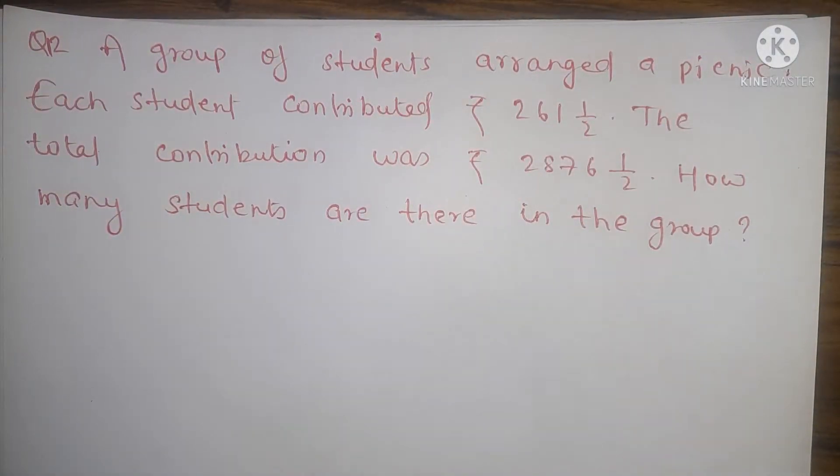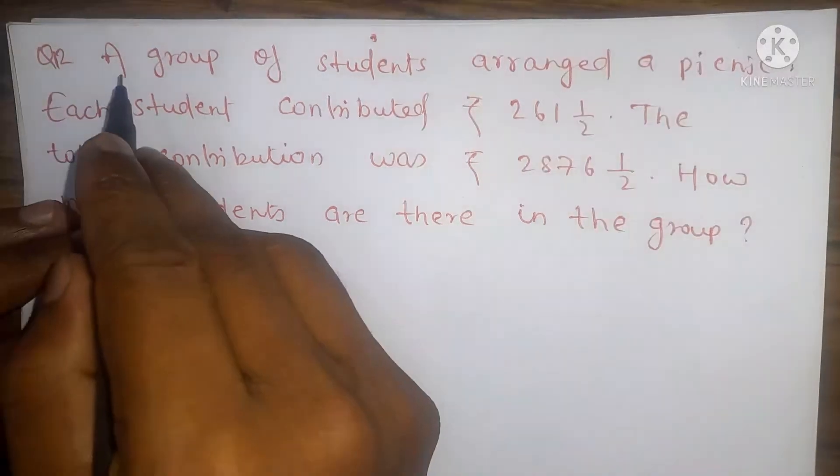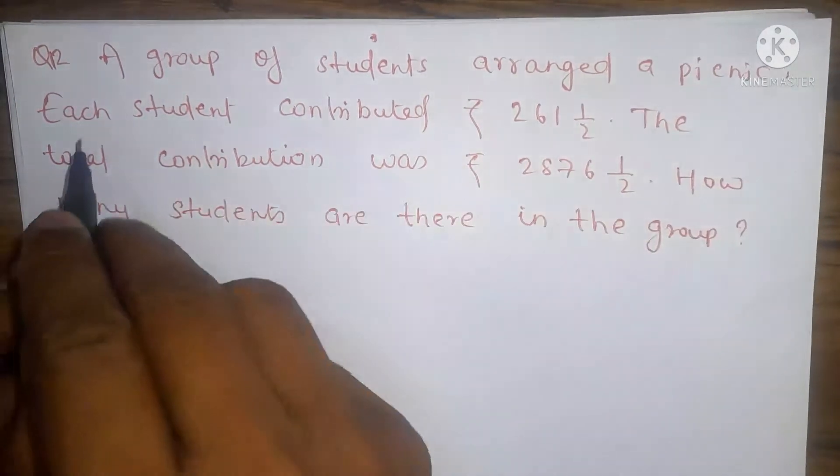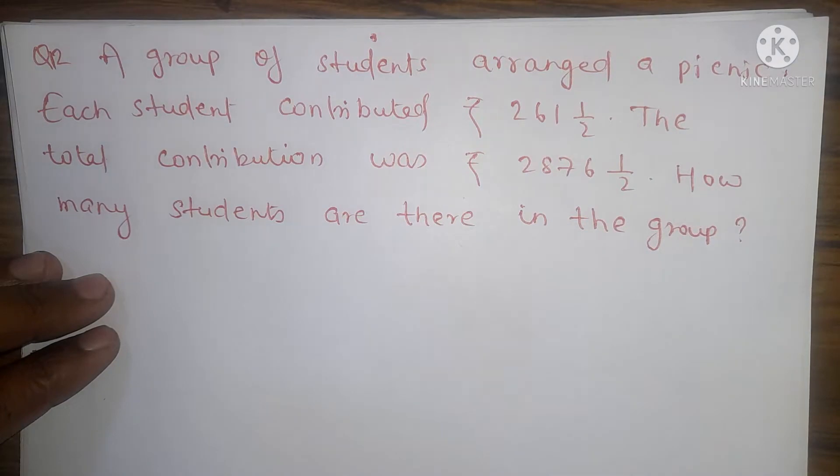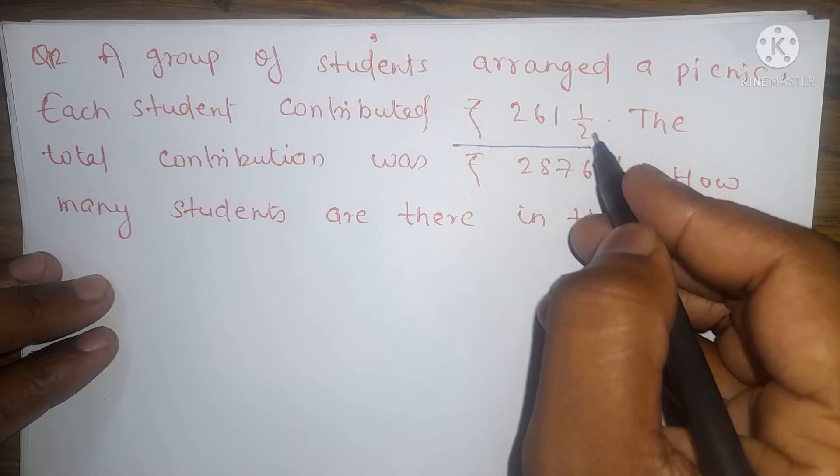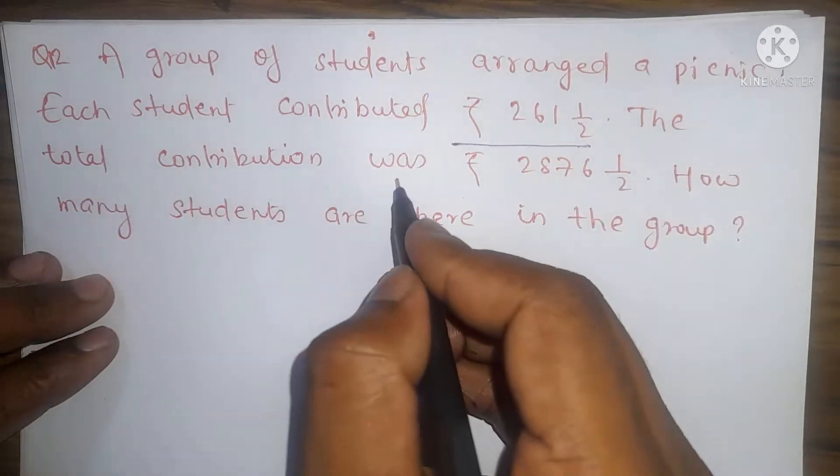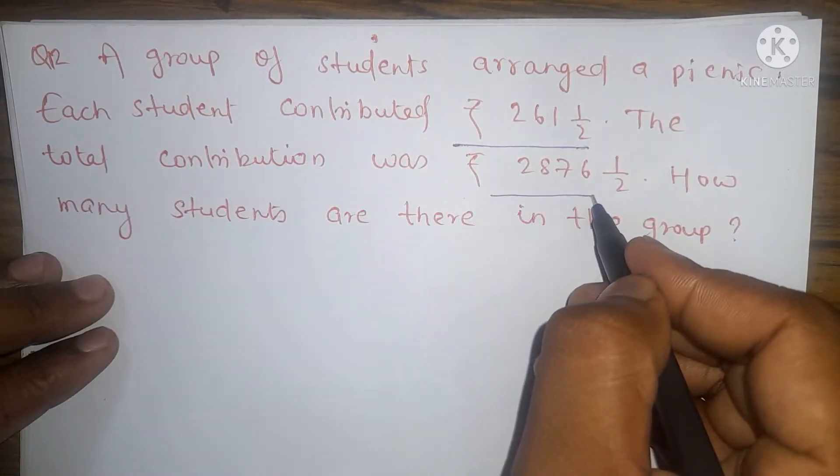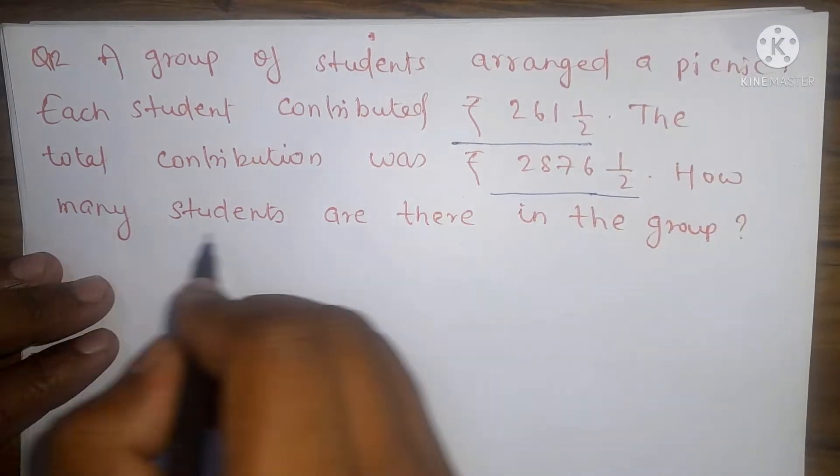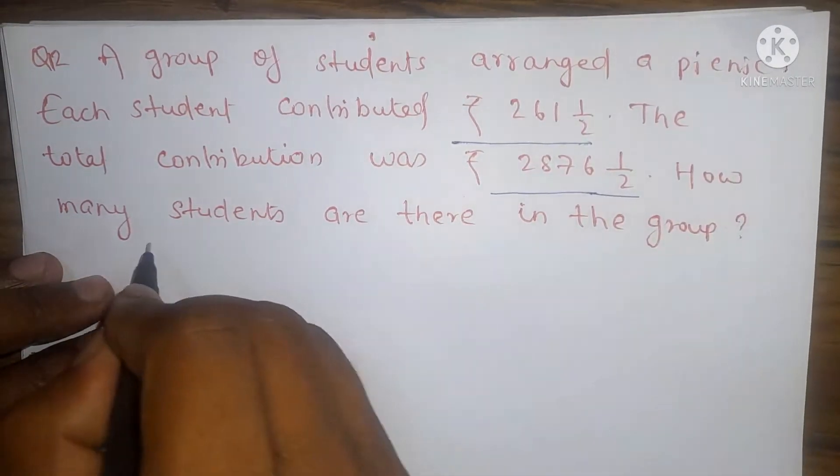Hi friends, we are going to solve this question. Please concentrate and listen carefully. A group of students arranged a picnic. Each student contributed 261 upon 1 by 2. The total contribution was 2876 upon 1 by 2. How many students are there in the group?